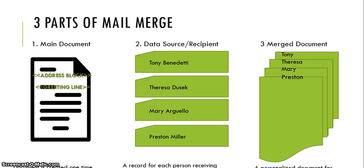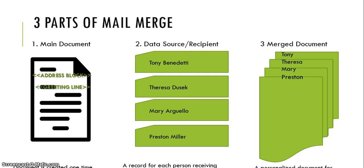It starts with the main document, and this document is created one time. Then you have the data source or the recipient list, and this consists of a record for each person receiving their document. Here we have four individuals who will be receiving the document. The third part of Mail Merge is the merge document, which is a personalized document for each recipient.